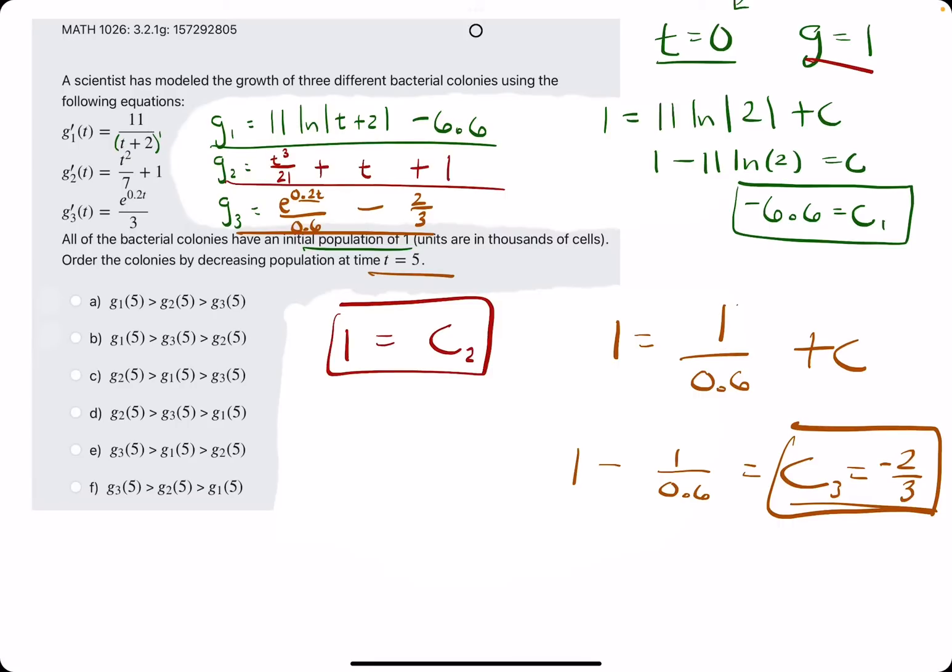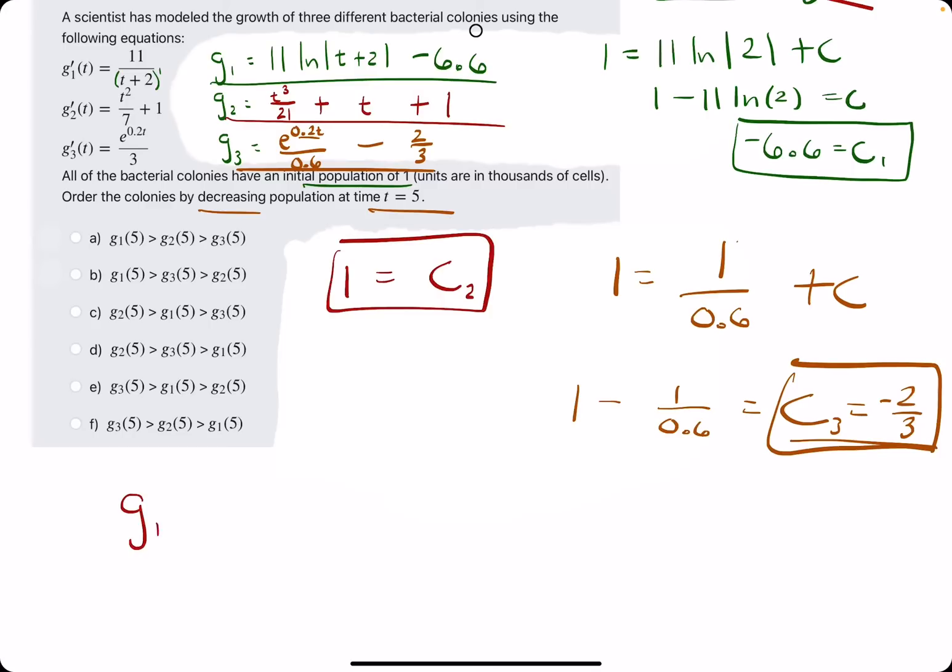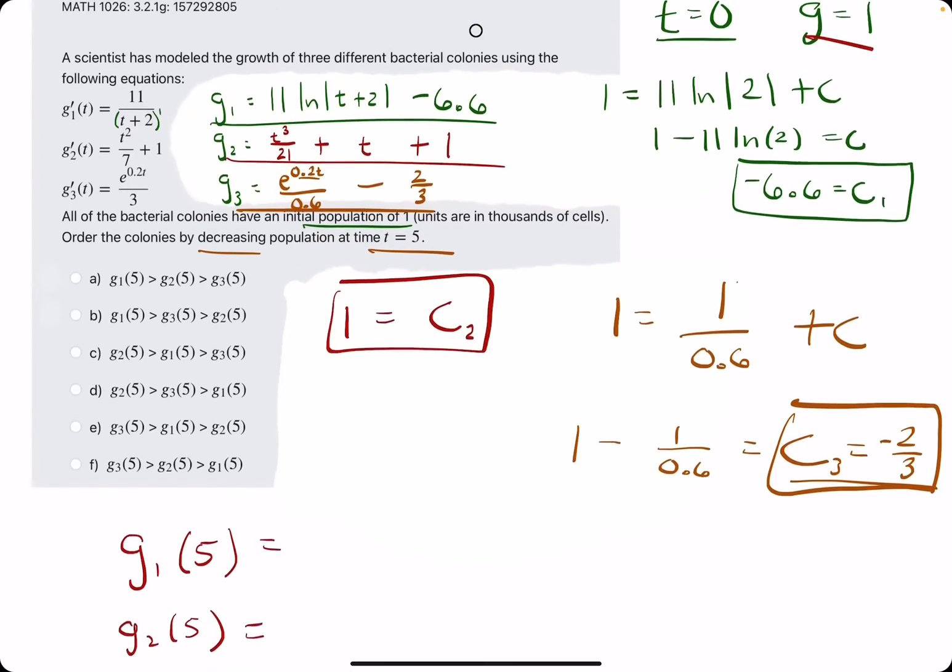Now, the idea is to plug in t equals 5 to all three functions, and then order them from greatest to least, in decreasing order. Starting with g1 of 5, then g2 of 5, and g3 of 5, we will just use desmos for all three of these.